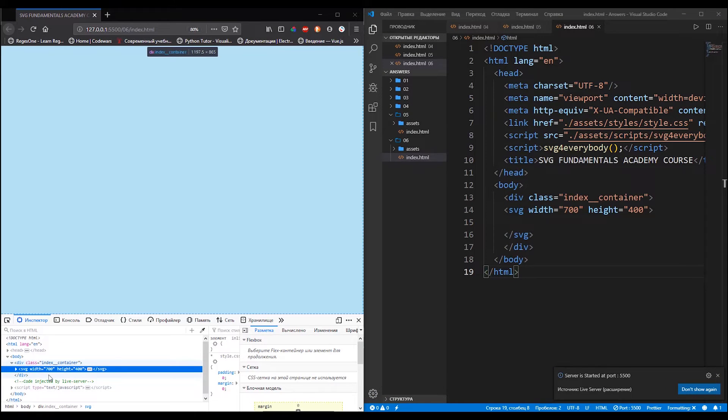I have added an SVG element with a height property equal to 700 pixels and a width property equal to 400 pixels. We can see the transparent rectangle that appears on the screen. It doesn't contain any graphics but it occupies the space inside the HTML document.